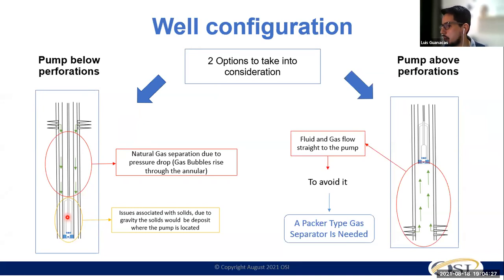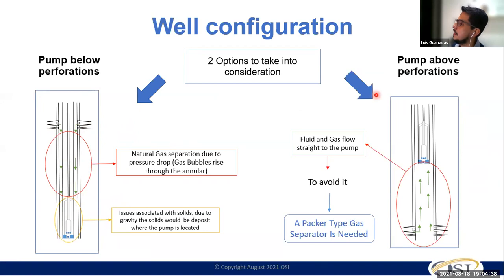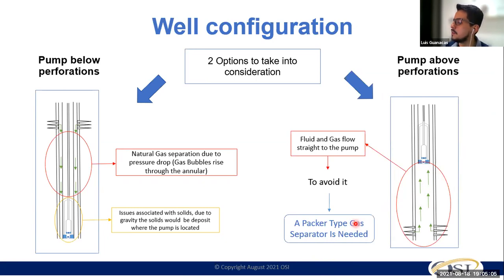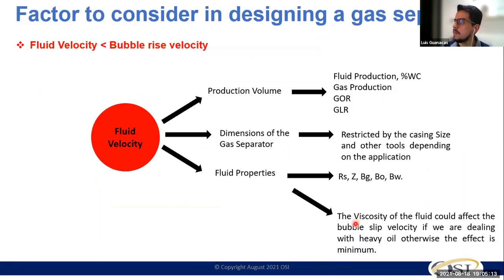If you're producing from an unconventional horizontal well, there's no way to place the pump below the perforations — this is more for conventional wells. Also, solid production must be considered. When the pump is above the perforations — which is pretty much 99% of wells in the Permian Basin — you can consider two options: a packerless gas separator assembly or a packer-type gas separator. That depends on the amount of gas you are producing and the geometry of your well, the casing, and the production tubing.